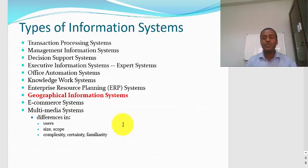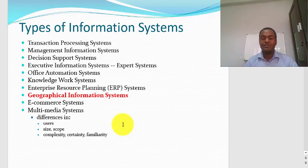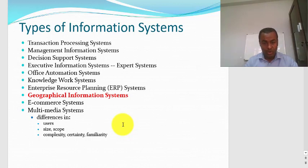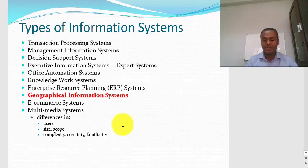What other types of information systems can we talk about? There is the transaction processing system, management information system, decision information system, enterprise resource planning system, geographical information system, e-commerce system, and multimedia system. For example, Amazon.com and Alibaba are the best examples of e-commerce systems, and YouTube is an example of a multimedia system. All of these are information systems, with different users, size, scope, complexity, certainty, and familiarity.